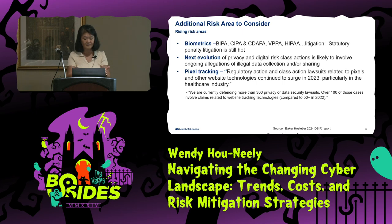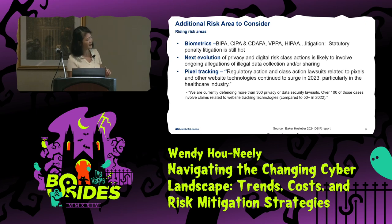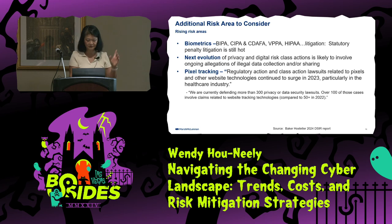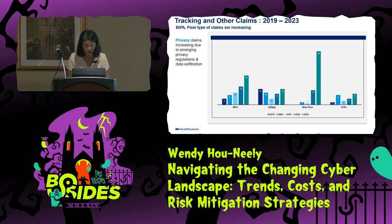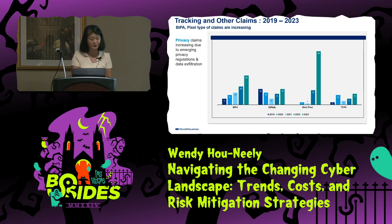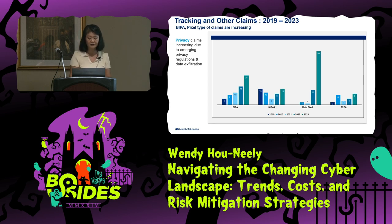Looking at this data, some larger household names are defending about 300 privacy lawsuit-type cases. I believe it's about one out of every hundred claims that results in a privacy lawsuit. Looking at Marsh data over the last few years, it's increasing year over year. The meta pixel cases went from two, to one, to zero, to 12 last year — 44 in 2023. So tracking of customer use is becoming a lawsuit as well, and BIPA claims right now are pretty hefty lawsuits.